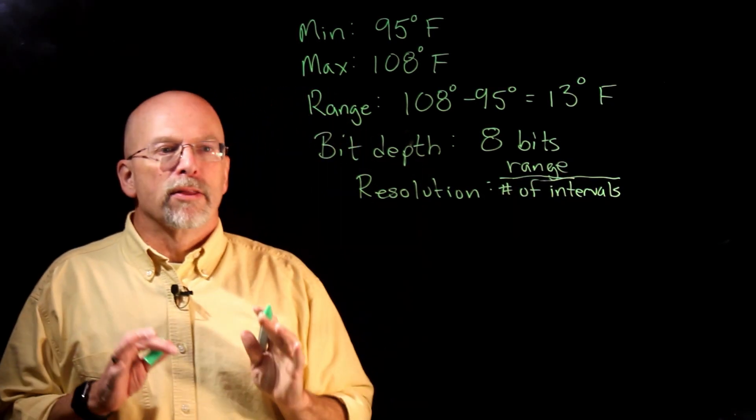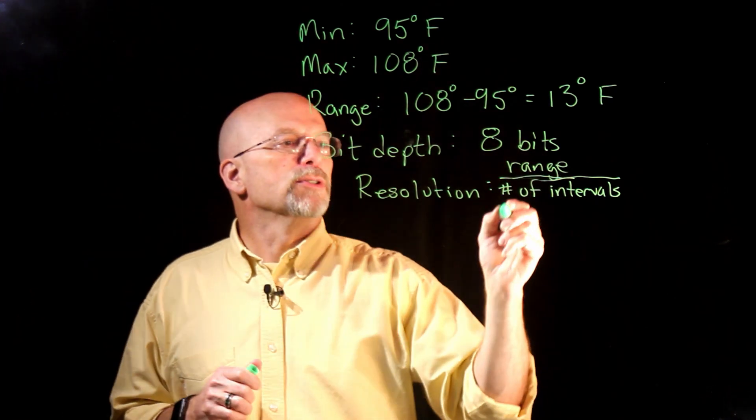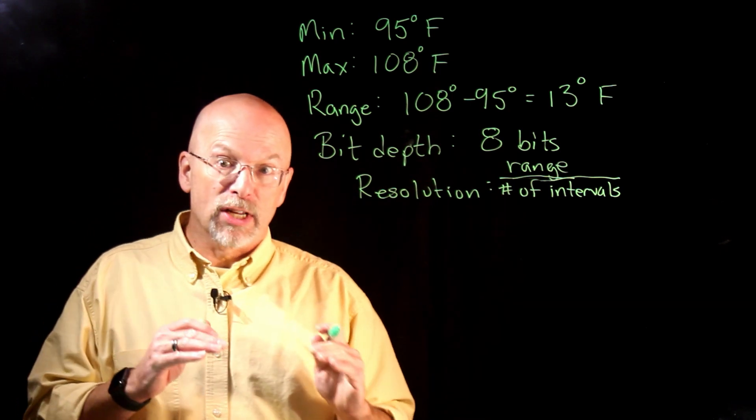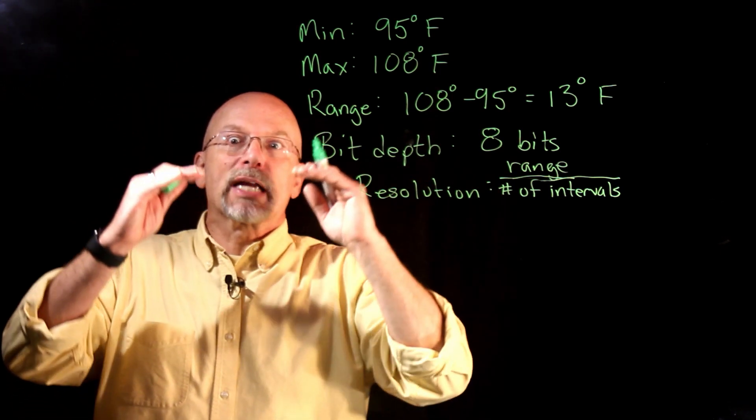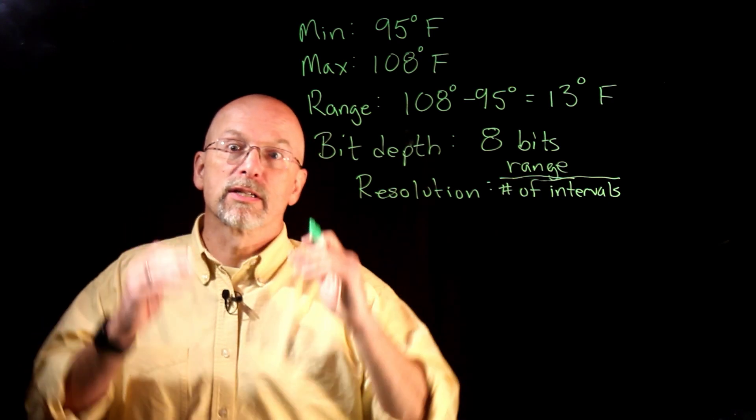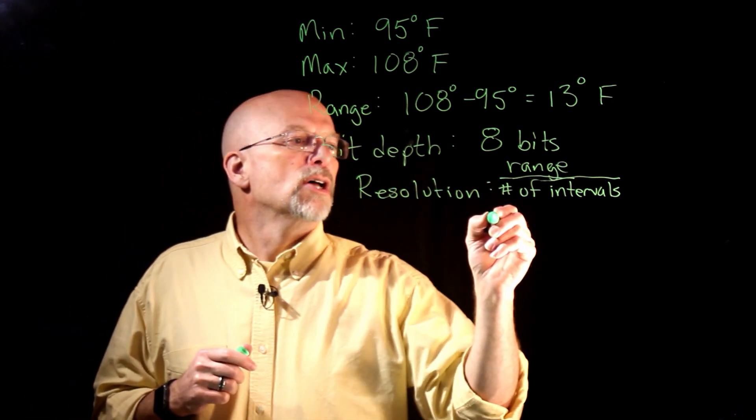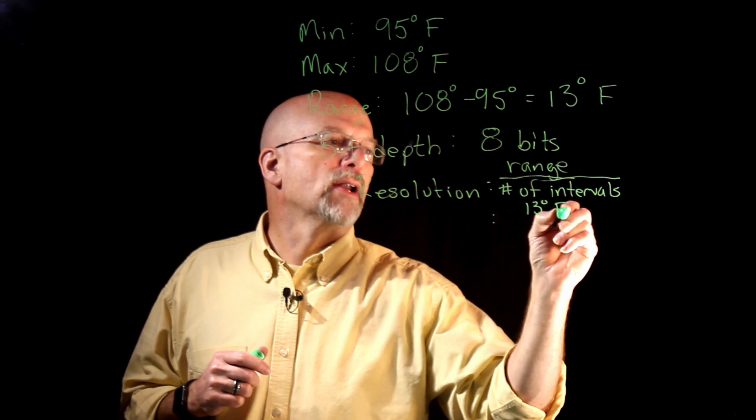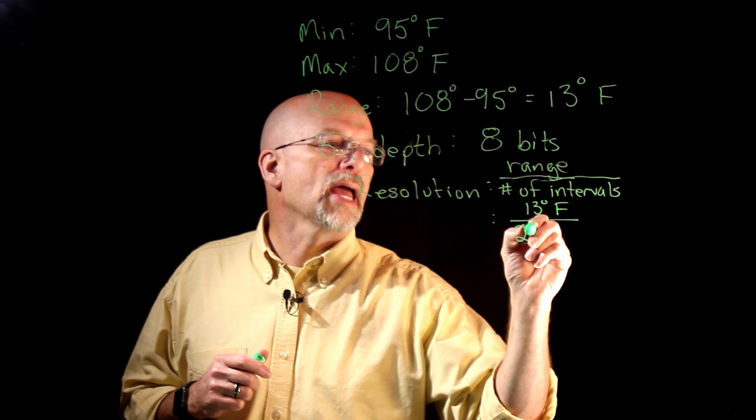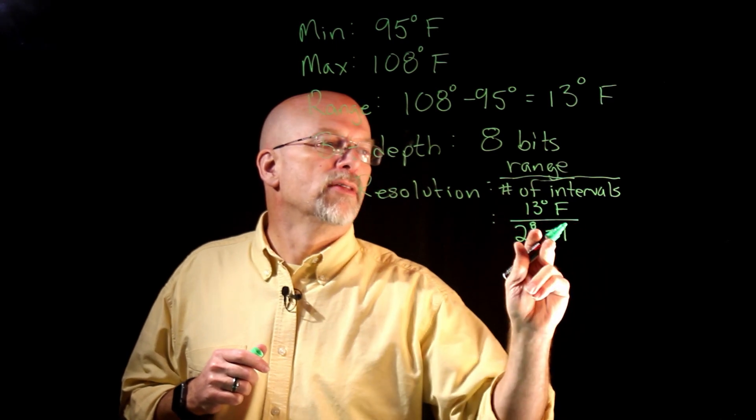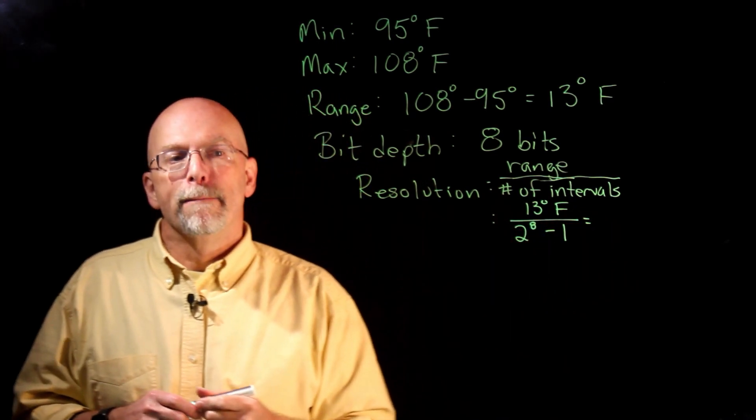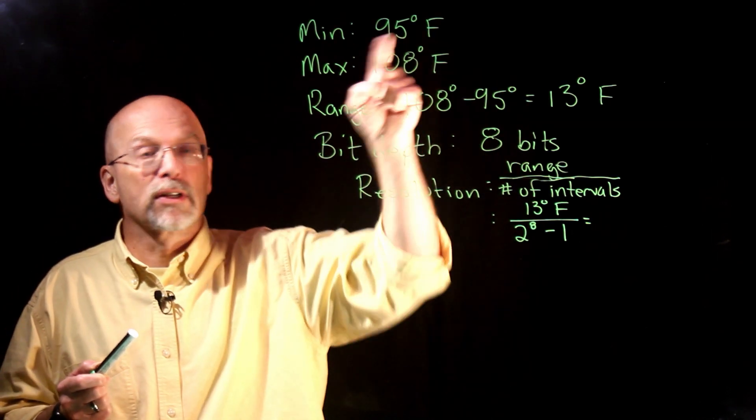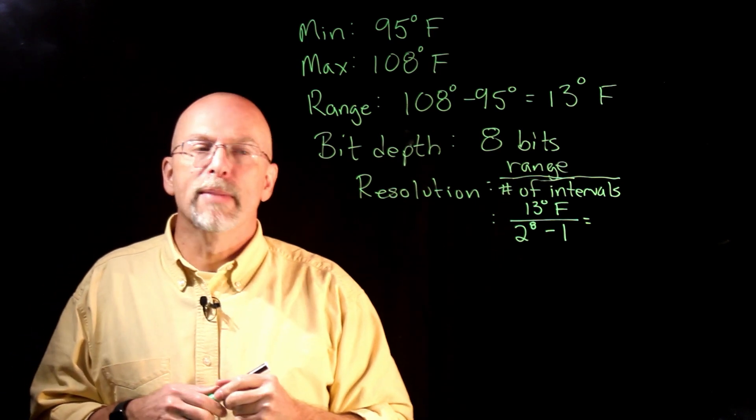That number of intervals is coming directly from our bit depth, because the bit depth tells us how many times we're counting up to go from the bottom, 95 degrees, up to the top, 108 degrees. So our resolution is going to be the 13 degrees Fahrenheit divided by 2 to the eighth minus 1. This minus 1 means that we have to assign one of the patterns of ones and zeros, specifically the all zeros case, to our minimum value.